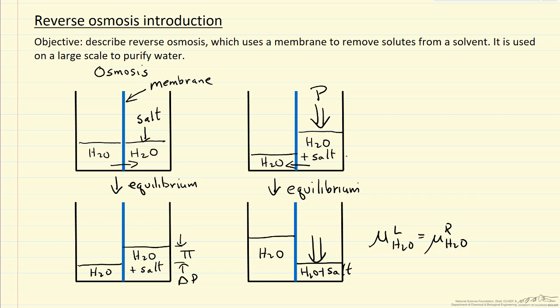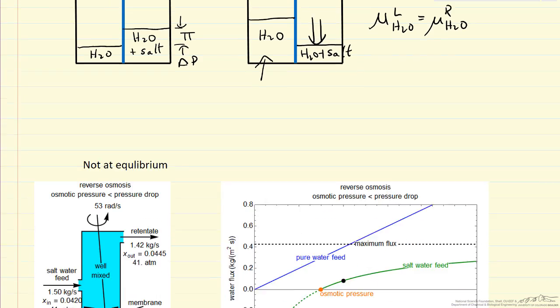So the idea would be if we started here with salt water, we could make more pure water because we have a membrane that will not allow the salt to permeate. Well, let's look at a diagram that represents this behavior.